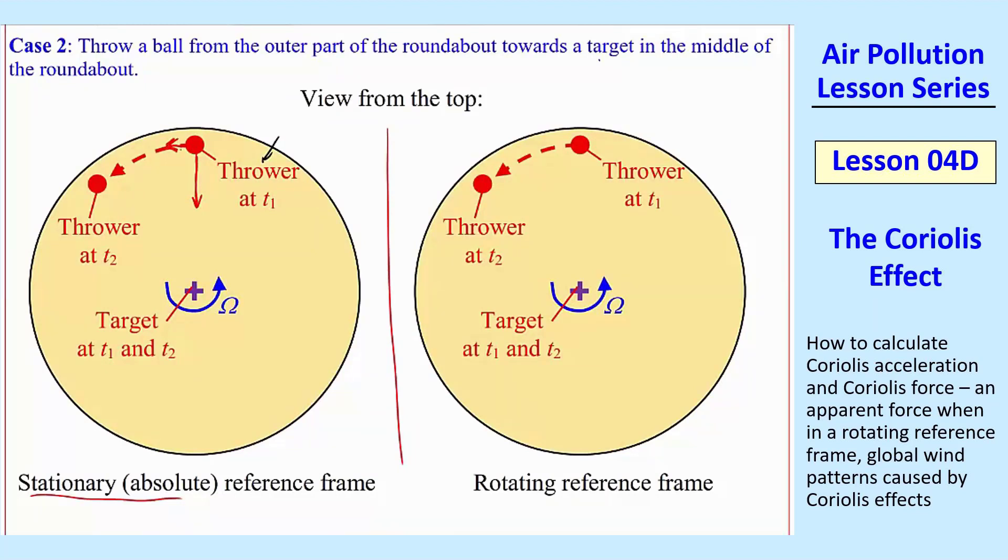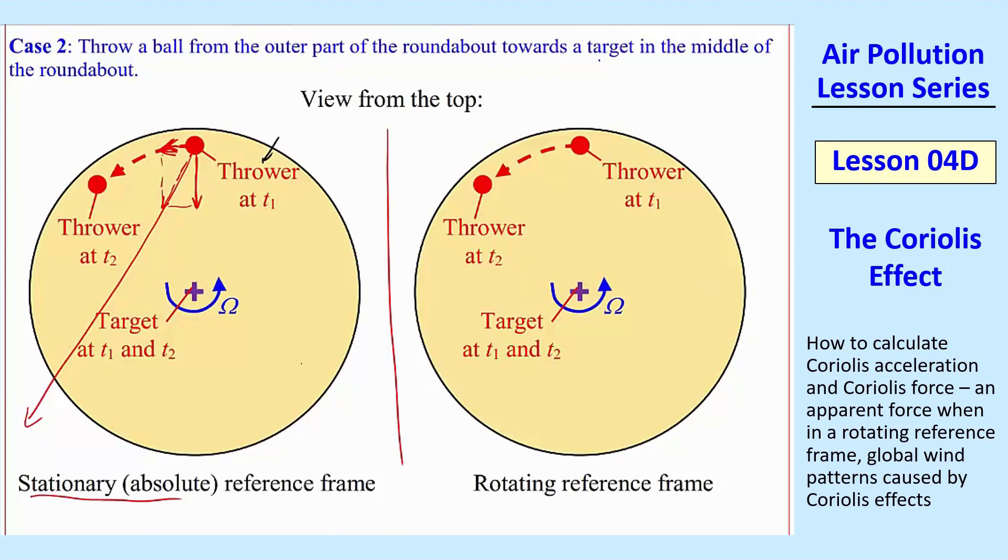there's a component to the left from looking from the top. So the actual velocity vector, if you take the parallelogram and sum that, he's throwing it like this. So from the absolute reference frame, it's going to go like that. From the observer's reference frame, now the observer, since he's also moving from here to here, it again appears that it's moving to his right. And so from the rotating reference frame on the right here,